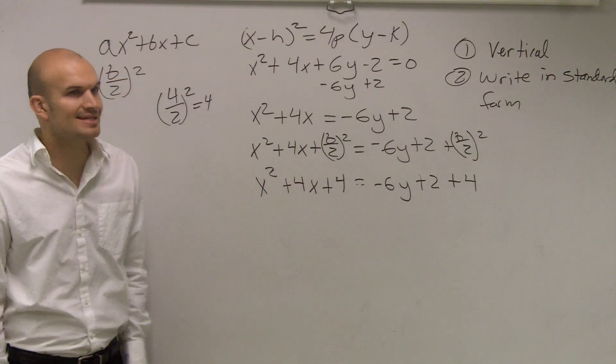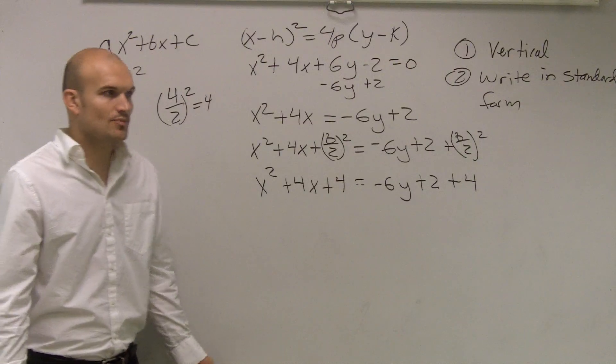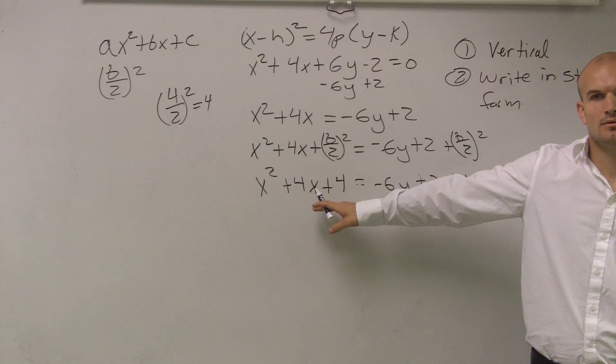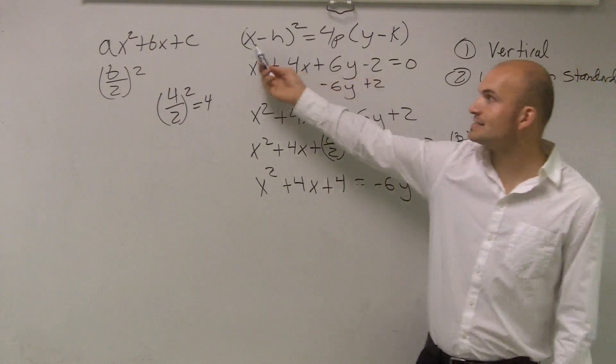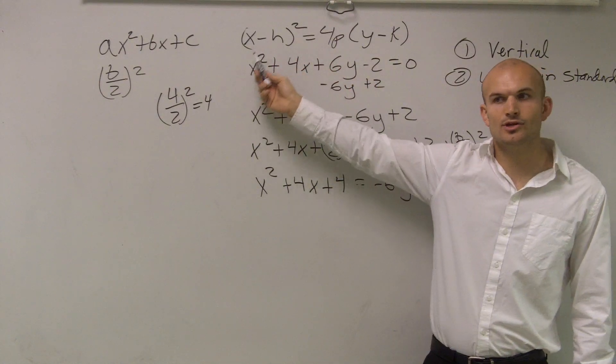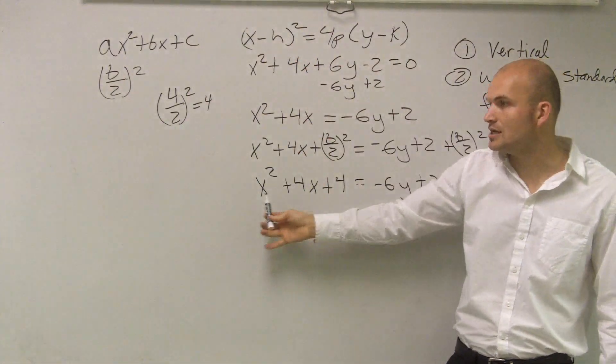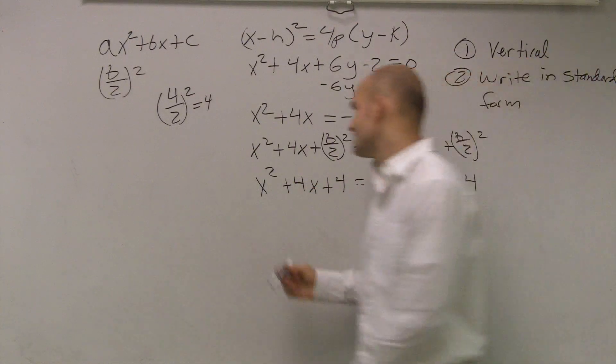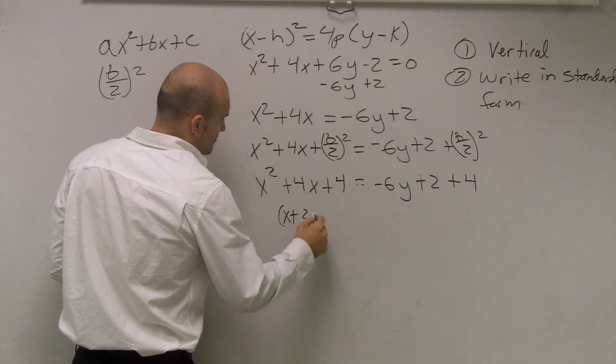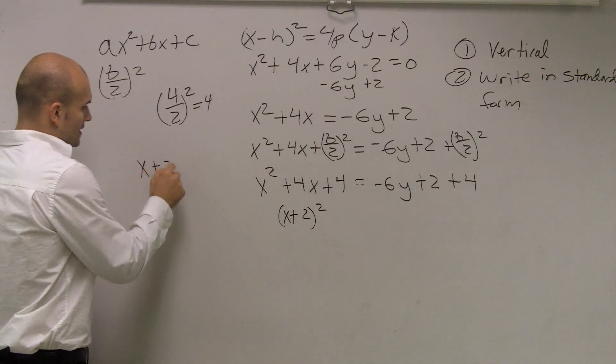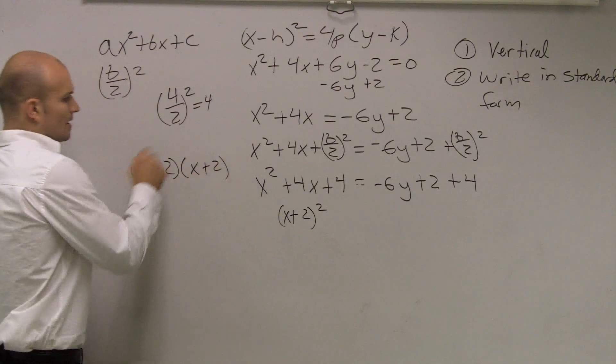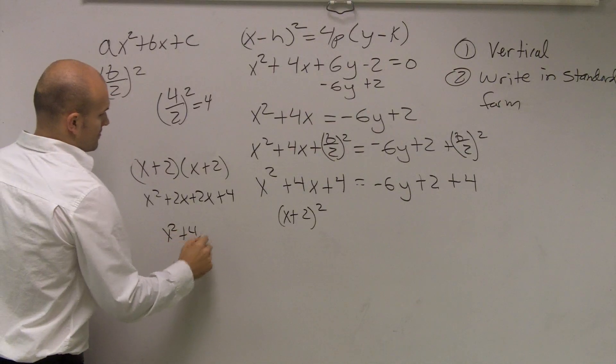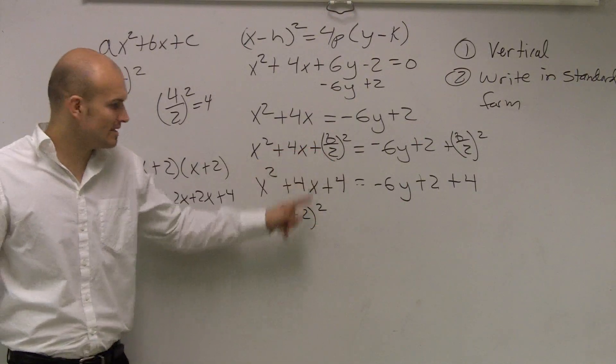But there's a reason why I did b divided by 2 squared. Because by doing that, I now gave myself a perfect square trinomial that I can rewrite now as a binomial. And that's what I want. I want it to look like x minus h squared. So by completing the square, I can write it now as x plus 2 squared. Let's check that work. x plus 2 squared is x plus 2 times x plus 2. x times x is x squared, 2 times x is 2x, x times 2 plus 2x, 2 times 2 is 4. That's why we complete the square, so we can get it to that format.